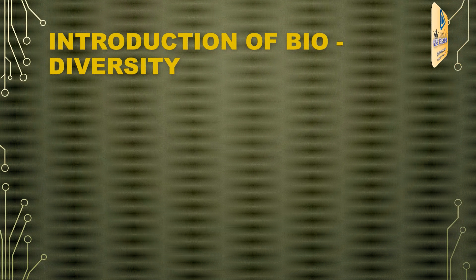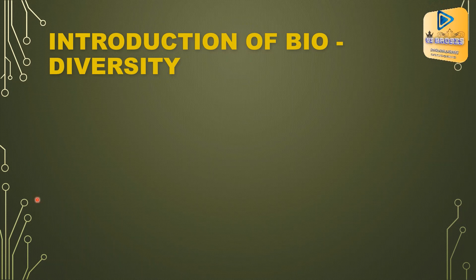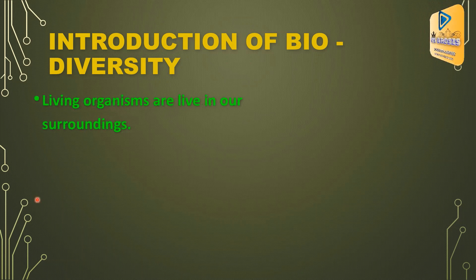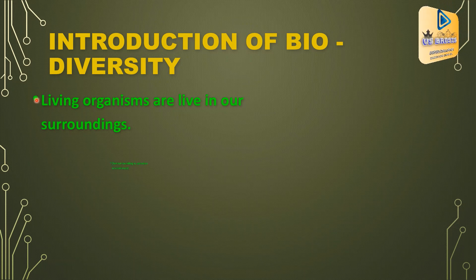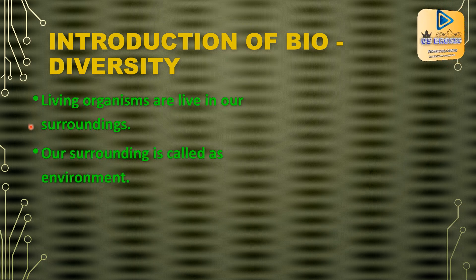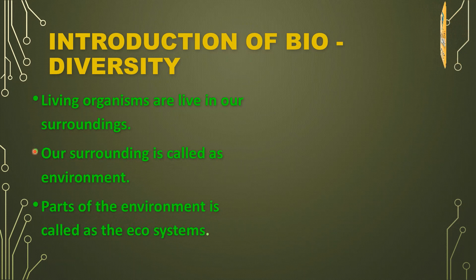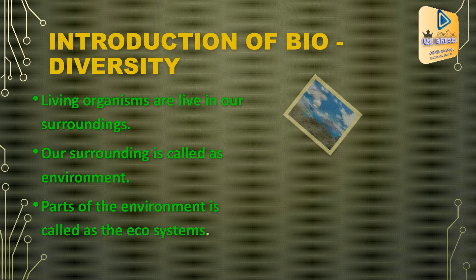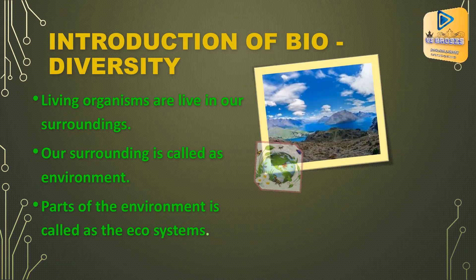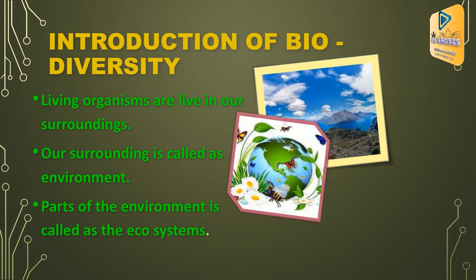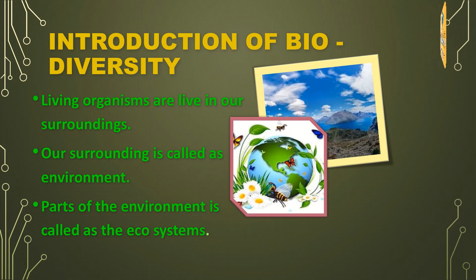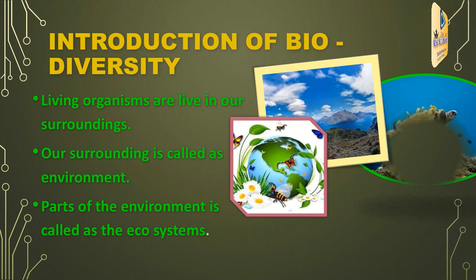First, we discuss about what biodiversity means. Living organisms are living in our surroundings. Our surroundings is called as the environment. Parts of the environment are called ecosystems. You can see in these pictures some types of ecosystems.